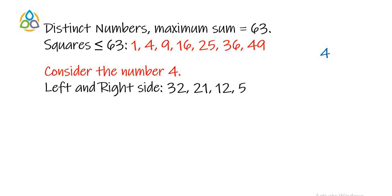In that case, 4 plus 32 is 36 which is 6 square. Or, we can place 21 so that 21 plus 4 is 25 which is 5 square. Or, we can place 12 so that 12 plus 4 is 16 which is equal to 4 square. Or, we can place 5 so that 5 plus 4 equal to 9 which is 3 square. These are the only possibilities. No other possibilities exist.